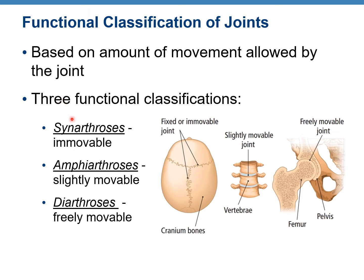The suffix 'arthrosis' means articulation or joint. Then 'syn,' 'amphi,' and 'di' tell us whether it's not movable, slightly movable, or freely movable. 'Syn' means come together. 'Amphi' is like amphibia — so it's here and there, not completely movable. And 'di' means two bones together move freely.